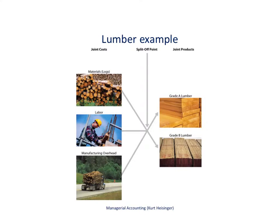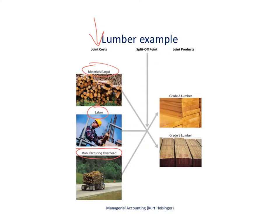Here are the joint costs as shown in the pictures. With materials, we're talking about logs — that's our input. We've got labor at the lumber mill, where we take those logs and turn them into usable lumber. We've got overhead, which can be lots of different things — one example is hauling the logs around with trucks. We'd also have machinery within the lumber mill and the building itself — those would all be part of manufacturing overhead.